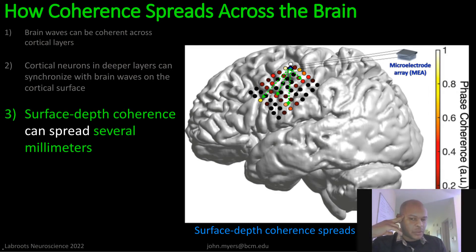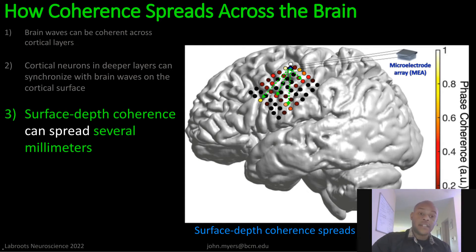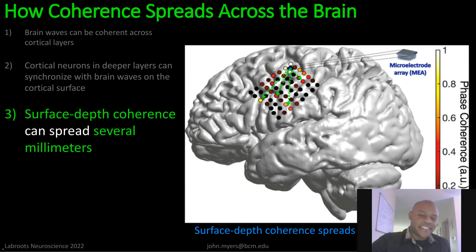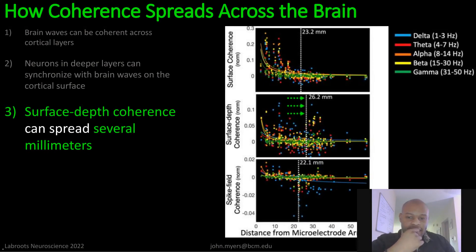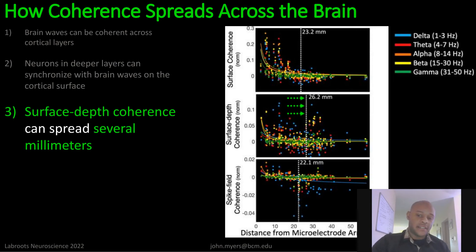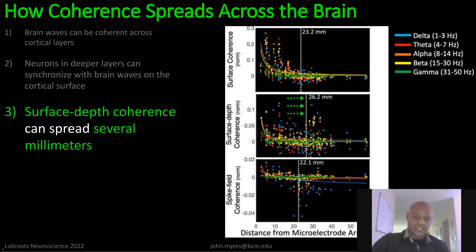This is a critical observation that needs to be studied more deeply in the field. It helps us understand how the brain talks to itself — how we compute information inside this amazing computer inside our heads. This shows how far it spreads: about 20 to 30 millimeters spread of coherence from a given region, which is a pretty good distance and farther than what we thought. The spread of phase coherence is greater than the spread of the field potentials alone.